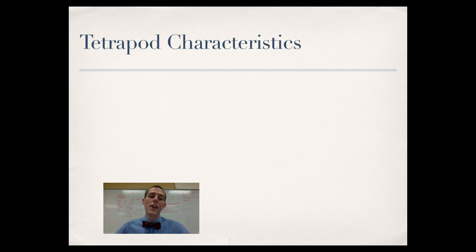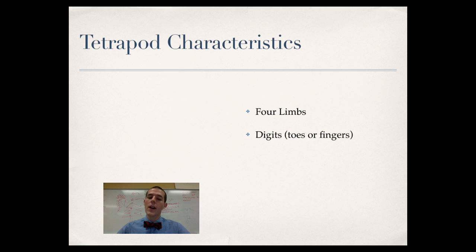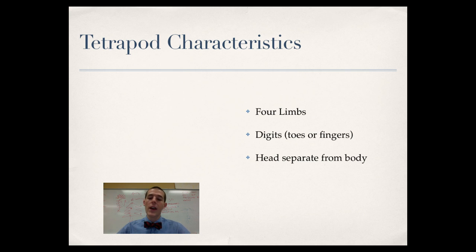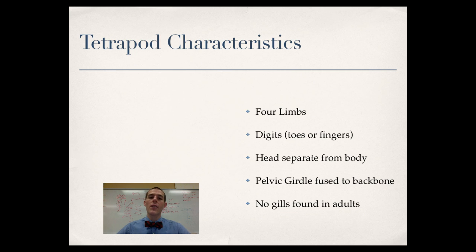Continuing forward, we get to tetrapods. Tetra means four, pod means foot — so four limbs and digits, meaning toes and fingers. The head is separated from the body by a neck. The pelvic girdle is fused to the backbone, specialized for life on land so the legs can transfer energy to the rest of the body. And no gills are found in the adults, though there are still pharyngeal gill slits resembling gills in embryonic forms.